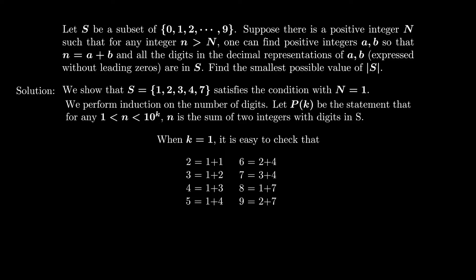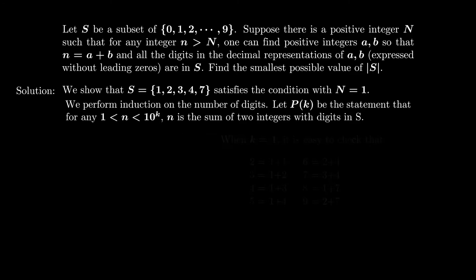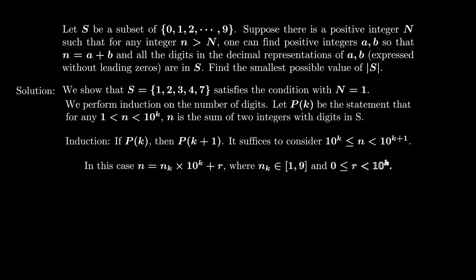Next, we assume that P(k) is true and prove P(k+1). Indeed, we only need to worry about numbers between 10^k and 10^(k+1). In this case, n is the sum of some number n_k times 10^k plus a remainder r, which is between 0 and 10^k. So now the natural idea is to apply the induction on this remainder r.